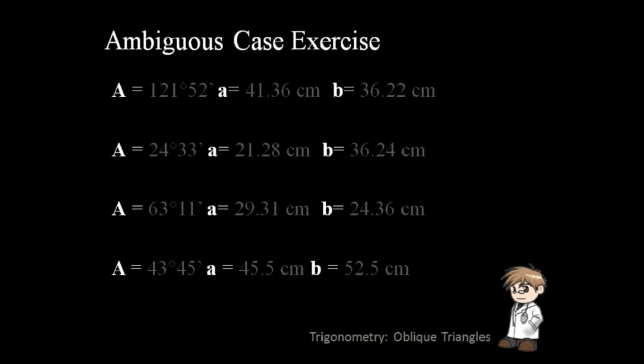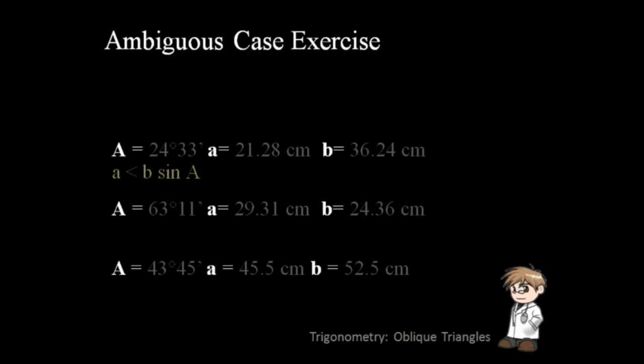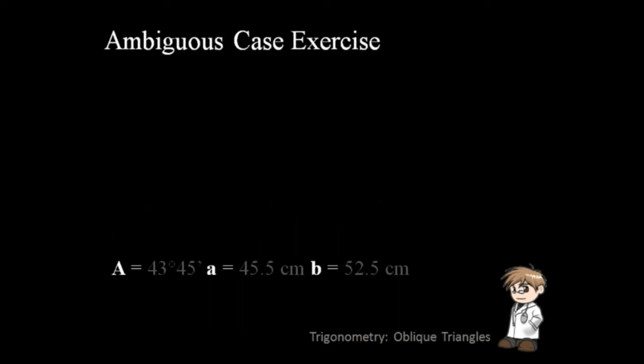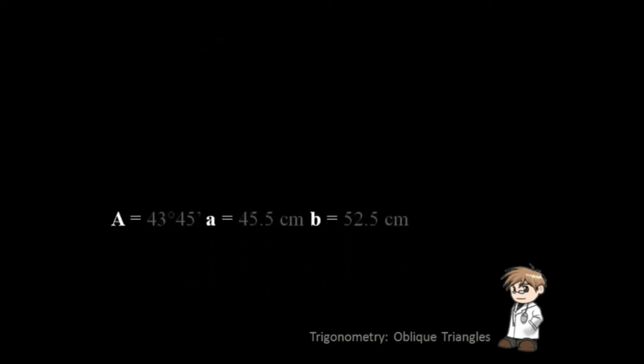So here are the answers. Case 1 is not ambiguous because the angle is obtuse. Case 2 is also not ambiguous because side A is less than side B multiplied by sine A. Case 3 is not ambiguous because side A is greater than side B. So our ambiguous case is case 4. Let's go solve it.